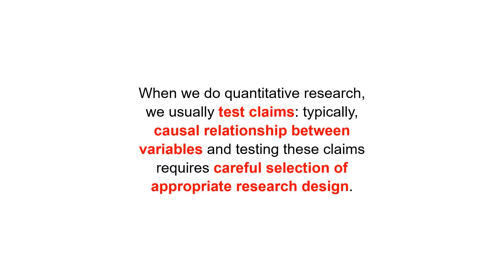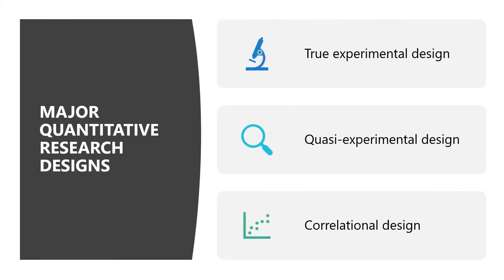When we do quantitative research, we usually test claims — typically, causal relationships between variables. Testing these claims requires careful selection of an appropriate research design. There are three major quantitative research designs: the true experimental design, the quasi-experimental design, and the correlational design.